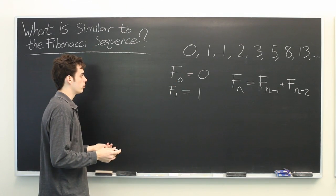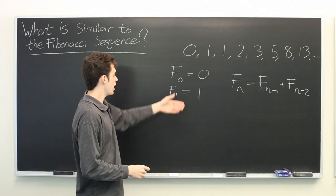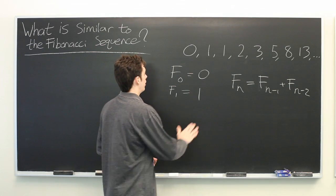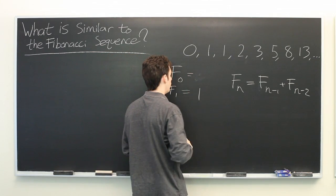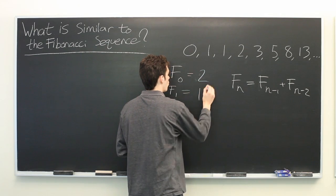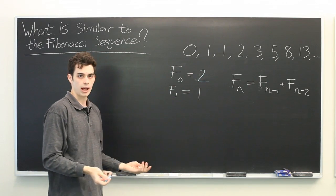For example, what if we just change our initial conditions slightly? Perhaps instead of 0, we have a 2. What does that look like?